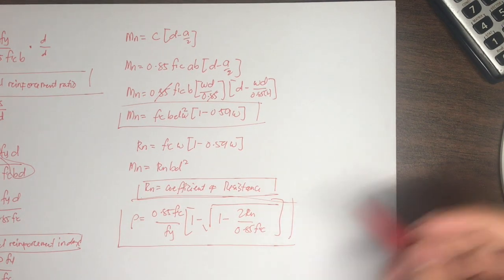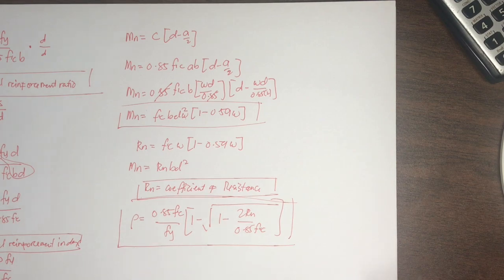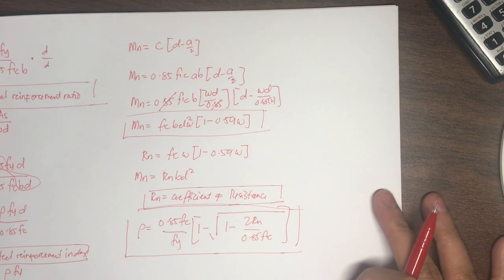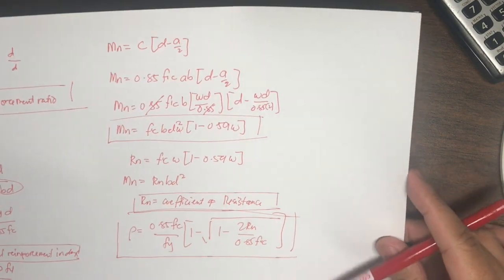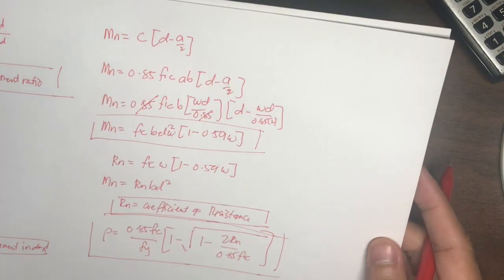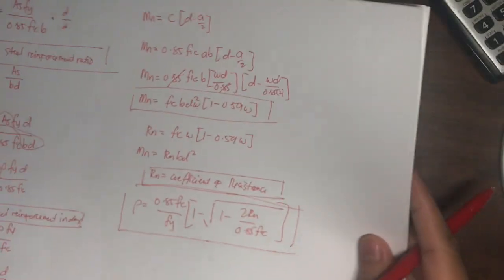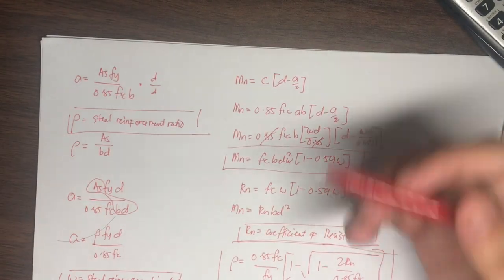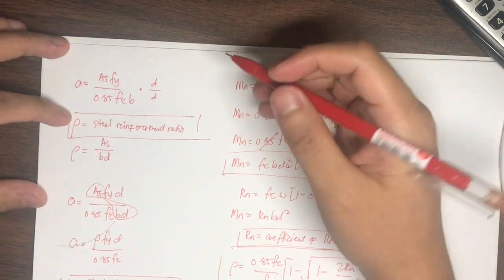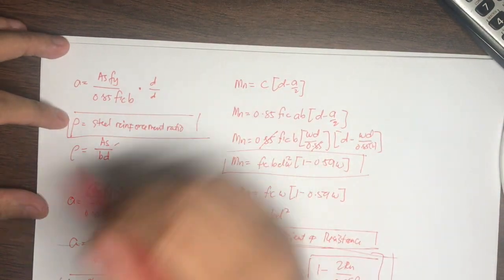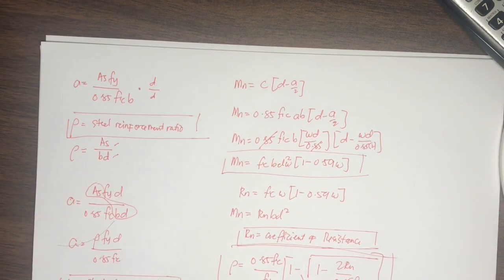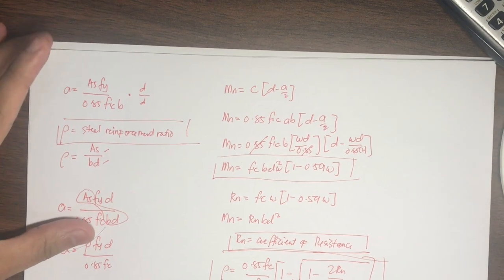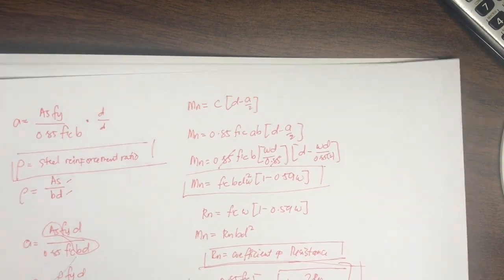The steel reinforcement ratio rho is very important. It is the ratio of the steel area As to the effective concrete area B times D. Based on the code, rho has both a minimum and maximum value.